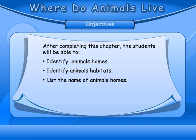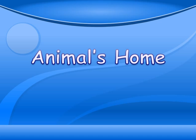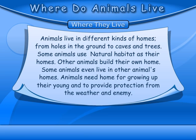Where do animals live? After completing this chapter, students will be able to identify animal homes and identify animals' habitats. Animals live in different kinds of homes, from holes in the ground to caves and trees. Some animals use natural habitats as their homes, others build their own homes, and some even live in other animals' homes. Animals need a home for growing their young and to provide protection from the weather and enemies.